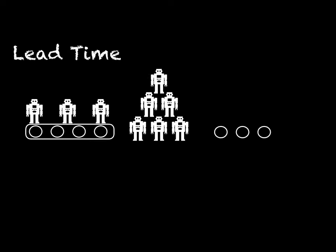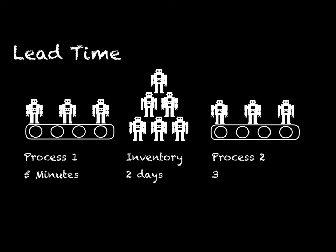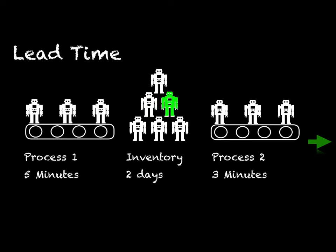So far we have covered takt time and cycle time. Now let's understand what lead time is. Imagine we have a production line with two manufacturing processes. Process one is painting, which lasts five minutes. Number two is an inventory where parts are stored for paint drying and further processing. Process two is assembly, where pre-painted parts are put together. Lead time is the time one part takes from the beginning to the end of the process, going through the inventory stages.